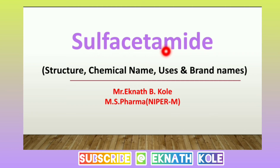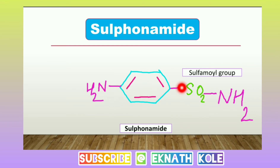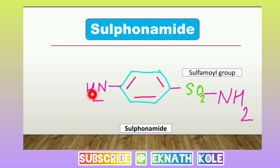If you know the basic structure of sulfonamide, you can directly write down the structure of sulfacetamide. So what is a sulfonamide? It has a benzene ring. On the first position you have an NH2 group, and on the fourth position you have an SO2-NH2 group — this is the sulfonamide group.